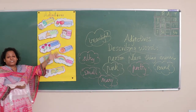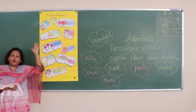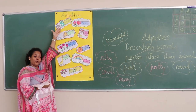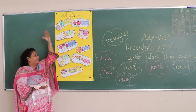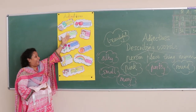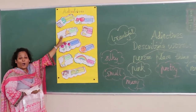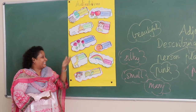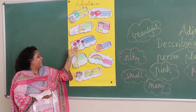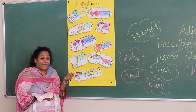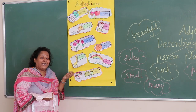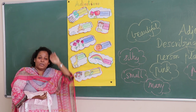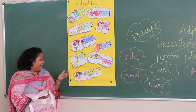Adjectives tell more information about numbers — many, few, two eyes. Then how you feel — hot, warm, cold. How it smells — yummy, delicious. It's sticky. Size — tall, short, small, big.